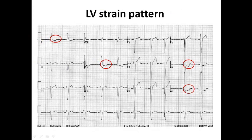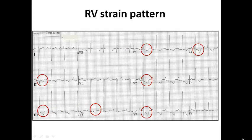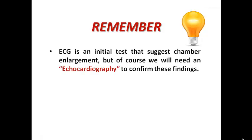For example, T-wave inversion in lead I, aVL, V5, and V6, combined with voltage criteria for LVH including the Sokolov-Lyon index and tall R-wave in aVL, confirms LVH with secondary repolarization abnormalities. In another example, a tall R-wave in V1 is diagnostic for RVH plus right axis deviation, with T-wave inversion and ST depression in leads II, III, aVF, and V1 to V4, confirming RVH with RV strain pattern. Remember that ECG is an initial test suggesting chamber enlargement, and transthoracic echocardiography is needed to confirm the finding, measuring LV wall thickness, LV mass index, or RV wall thickness.